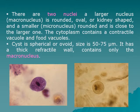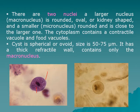The trophozoite of Balantidium coli has a large macronucleus and a small micronucleus. The macronucleus is rounded, oval, or kidney-shaped, and the micronucleus is round and close to the larger nucleus. The cytoplasm contains contractile vacuoles and food vacuoles. The cysts are spherical or ovoid, about 75 micrometers, with a thick refractile wall containing only the macronucleus.